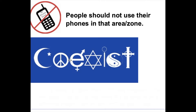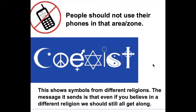This sticker reads 'coexist' and shows different symbols for different religions. 'Co' means together — like cooperate or communicate. 'Exist' means we're in the same place. So we're co-existing together. This bumper sticker's message is that even if you believe in a different religion, we should all get along, coexist, and be educated in the same places.